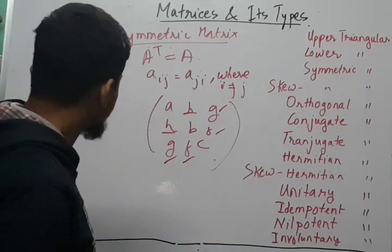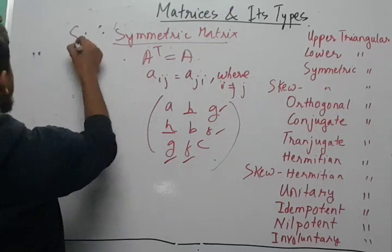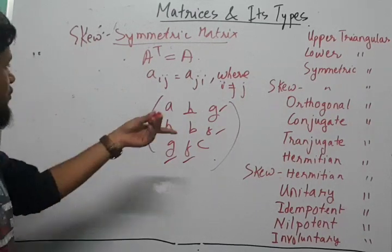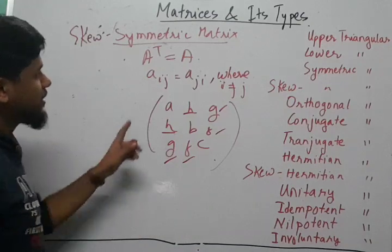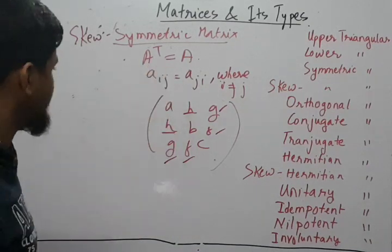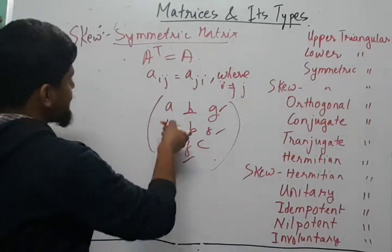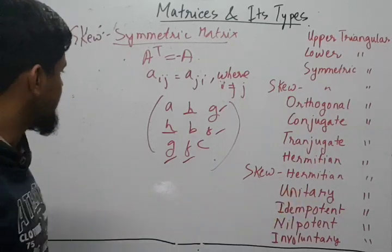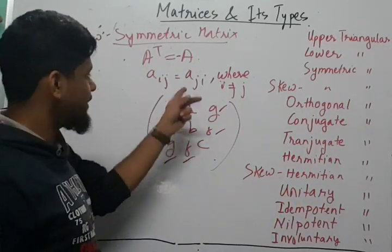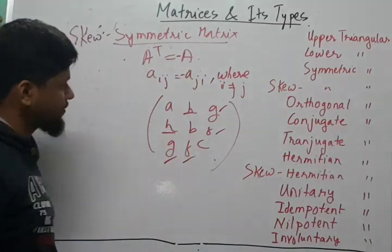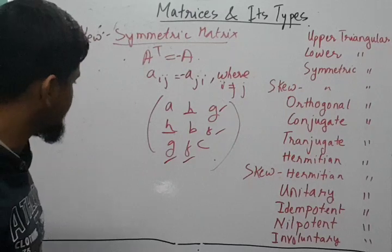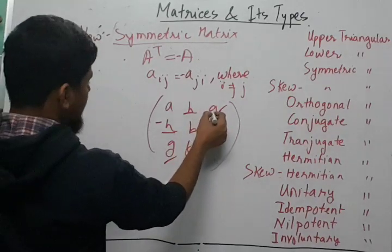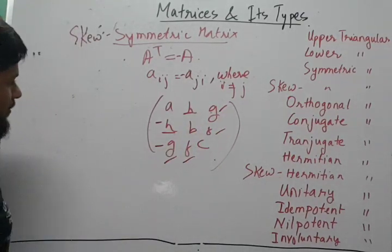In a skew symmetric matrix, instead of A transpose equaling A, we have that A transpose equals the negative of matrix A. This means the aᵢⱼ element will be the negative of the aⱼᵢ element. So if we have H in one position, the corresponding element will be minus H.